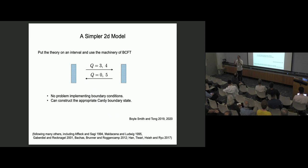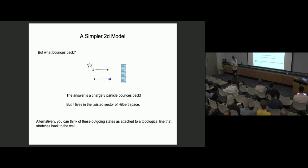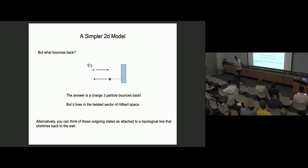The answer is: what bounces back if you throw in a charge-3, when all you've got going the other way is a zero and a five? The answer we've come to over many years of confusion is that what bounces back is a charge-3 particle — even though there's no charge-3 particle in the spectrum. The wall acts as a portal into a twisted sector of Hilbert space, and when you throw the particle at the wall, what bounces back is a particle that's not an excitation of your original Fock space, but is an excitation of a twisted Fock space.